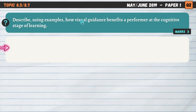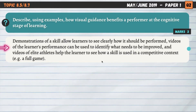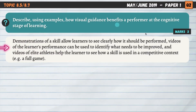Visual guidance is guidance that can be seen — demonstrations, videos, images, etc. So how does visual guidance benefit a beginner or cognitive learner? Demonstrations of a skill allow learners to see clearly how it should be performed. Cognitive learners are beginners; they don't have a clear picture yet of how the skill should be performed, and demonstrations can help resolve that.